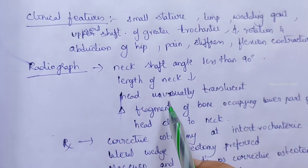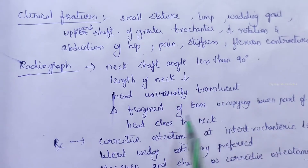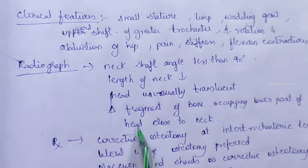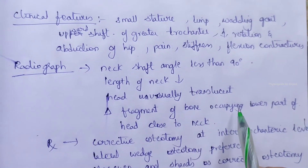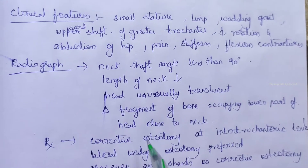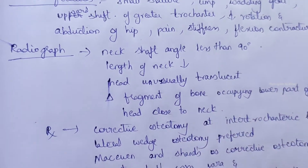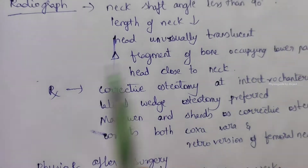Further radiographic findings include the femoral head appearing unusually translucent, and a triangular fragment of bone occupying the lower end of the head close to the neck.